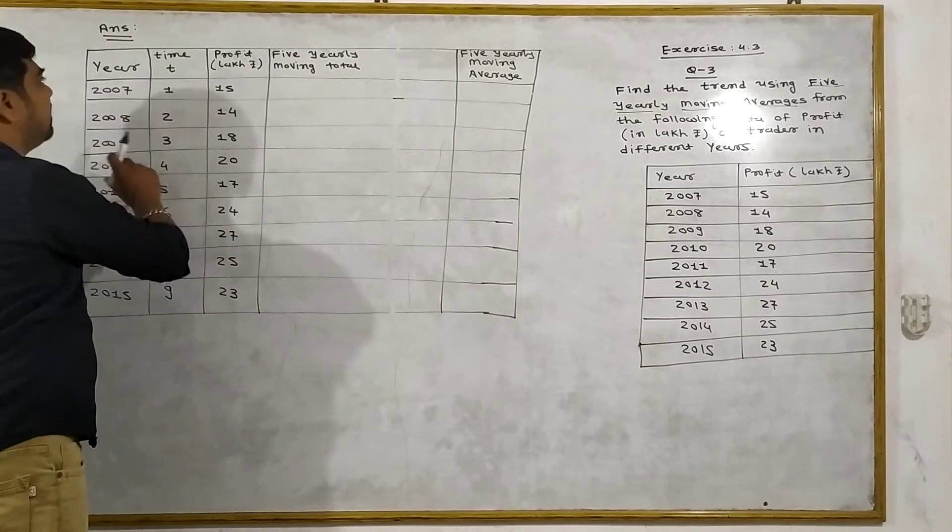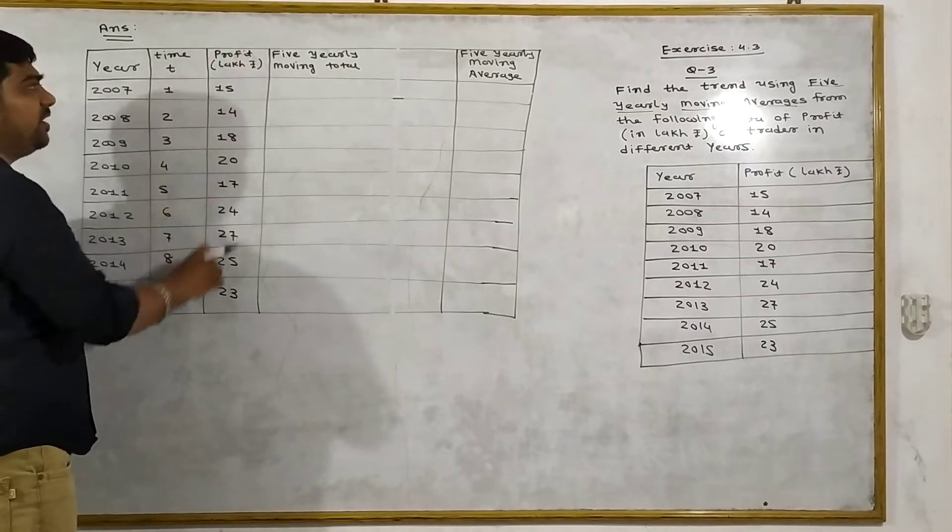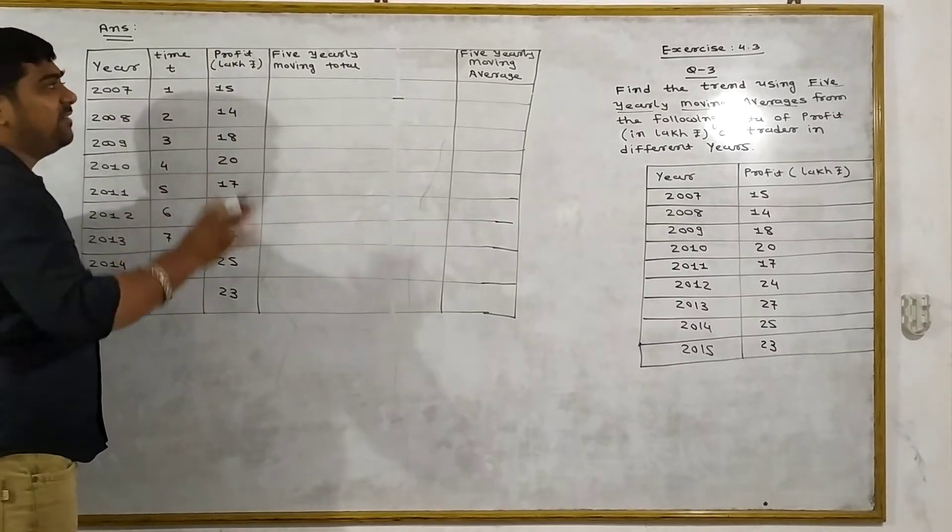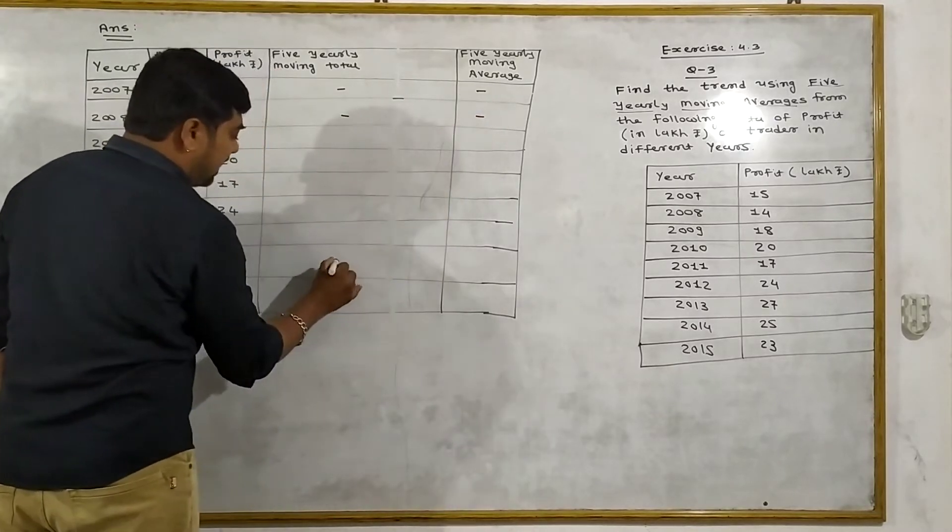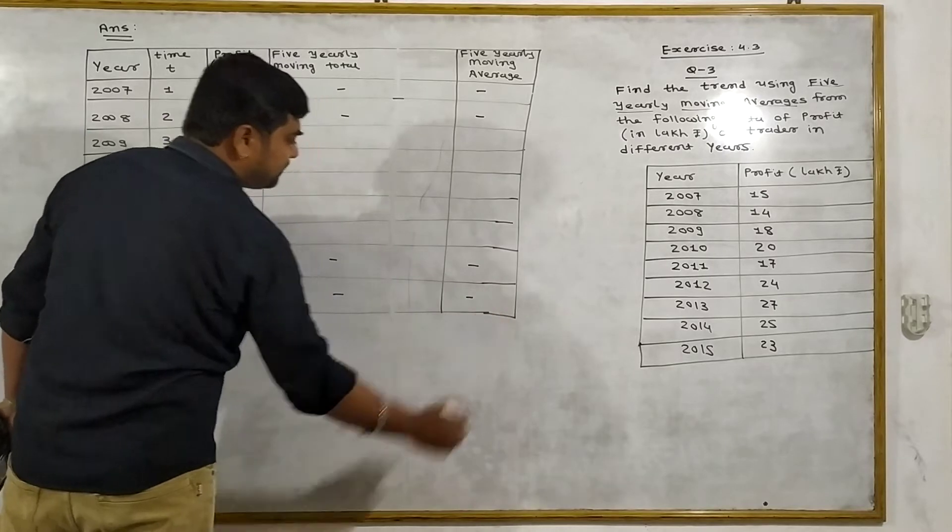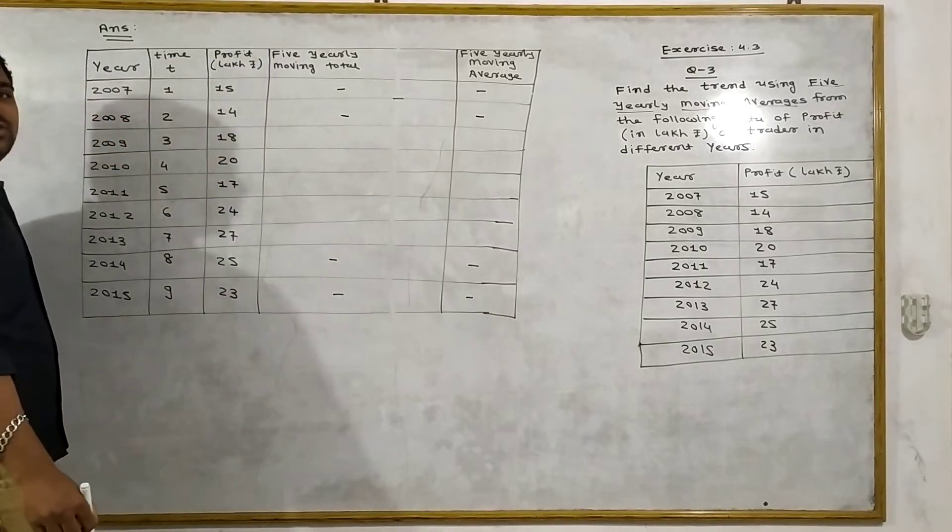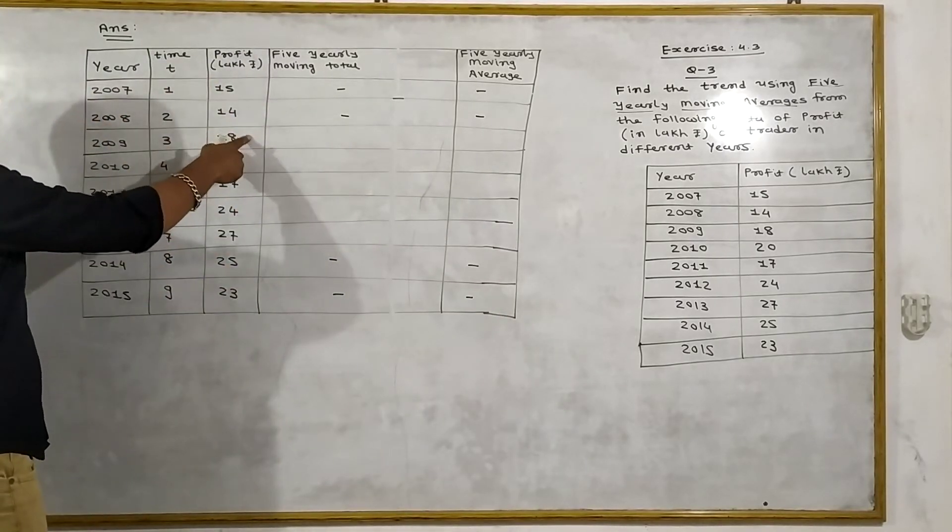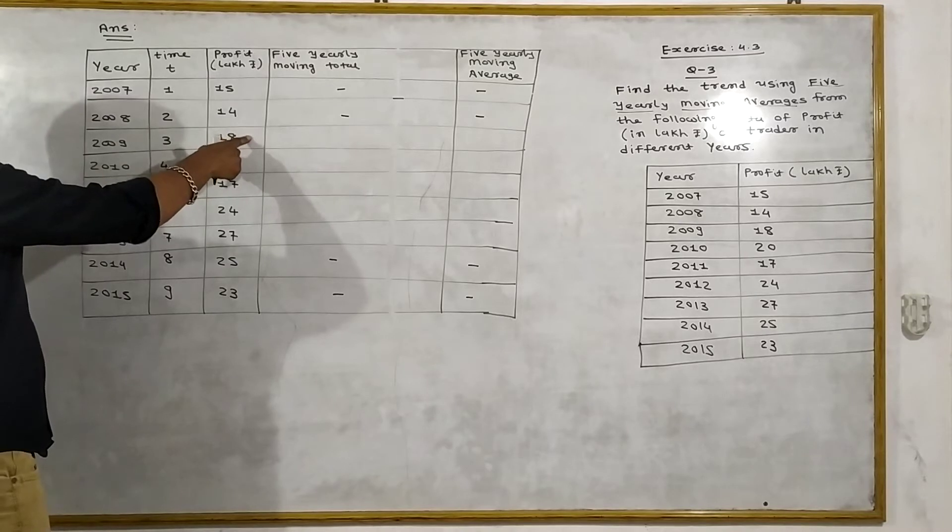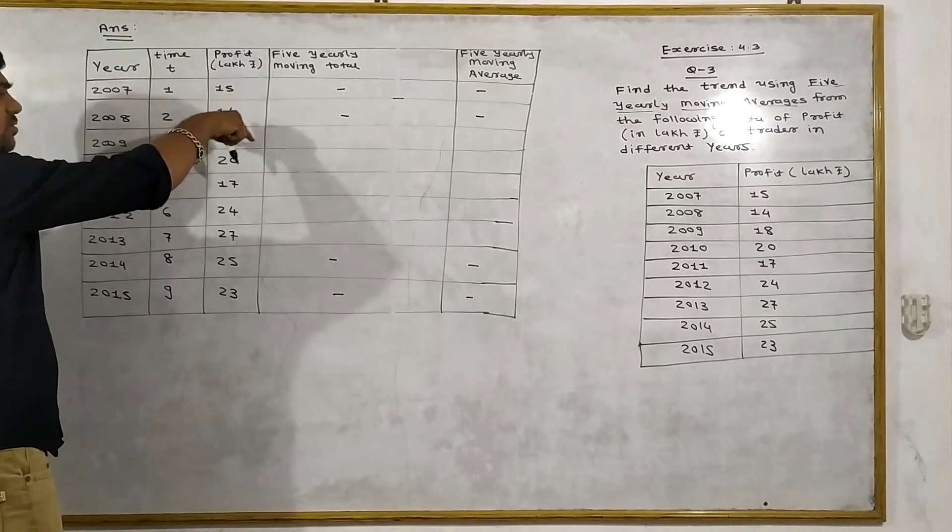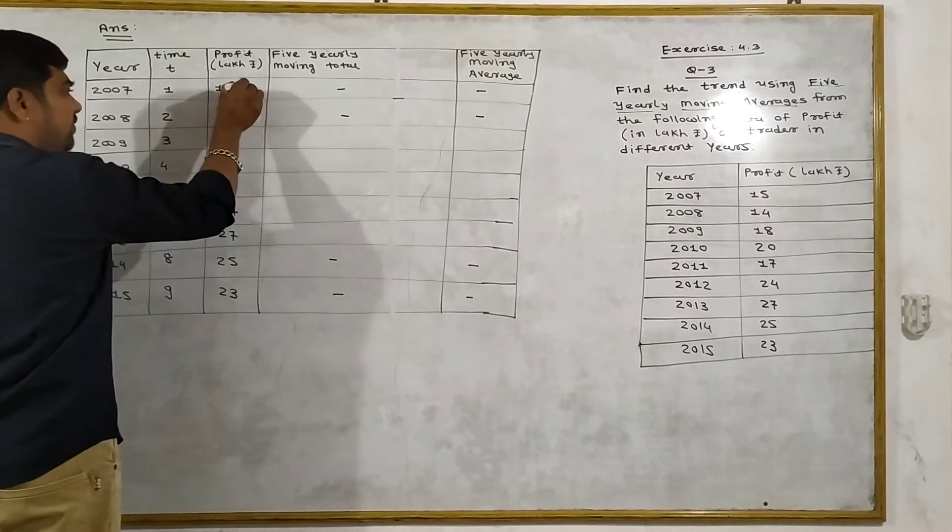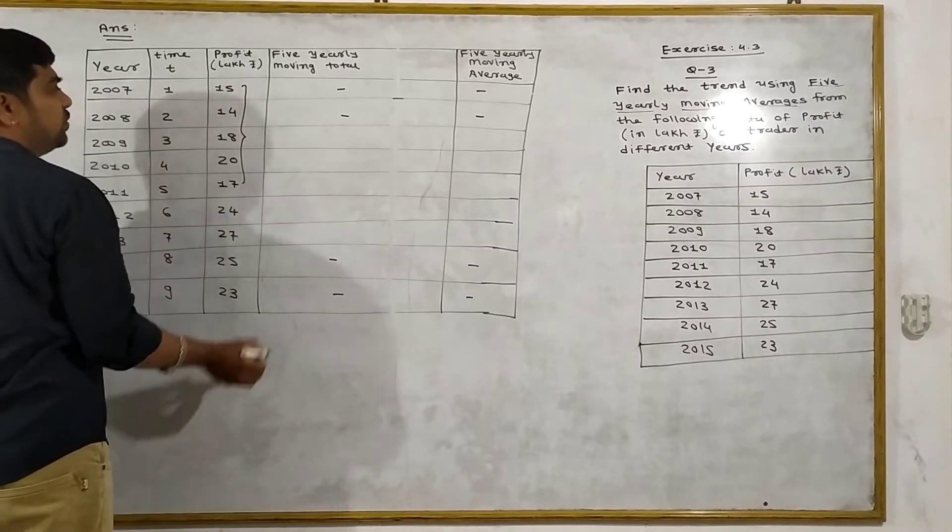The year is the time, the profit is the value. When you find a moving average, the first 2 years and last 2 years cannot be calculated. We have to calculate the third year. In the third year we calculate the first 5 years total.